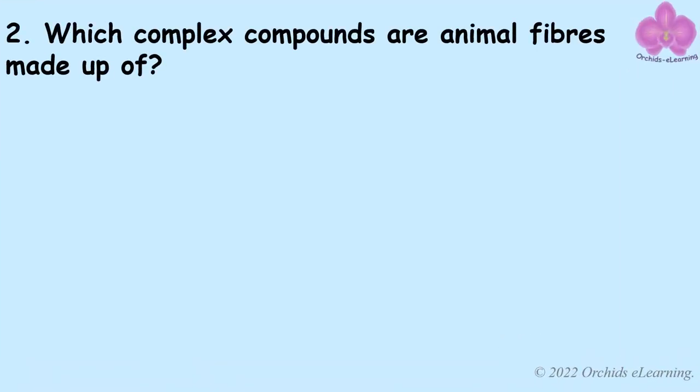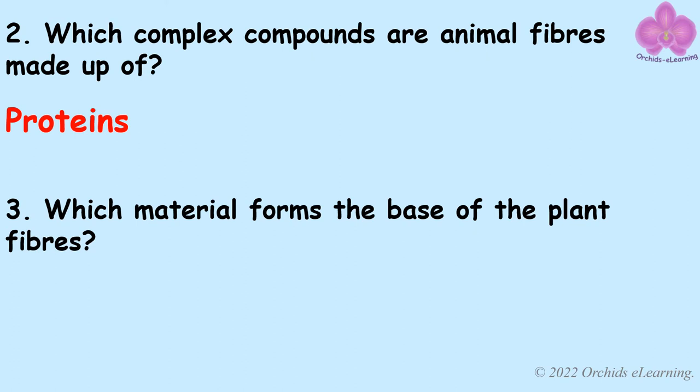Which complex compounds are animal fibers made up of? Animal fibers are made up of proteins. Which material forms the base of plant fibers? The base of plant fibers is cellulose.